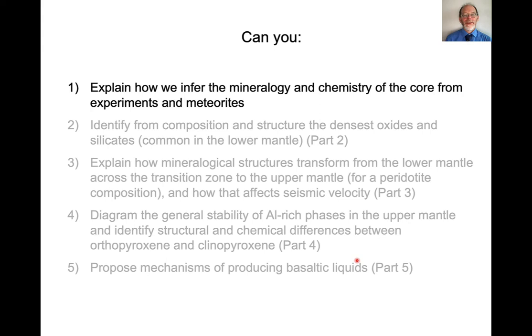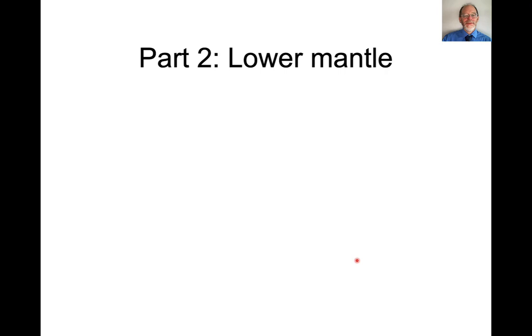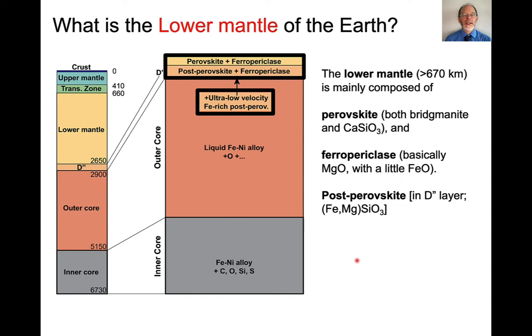So at this point, I hope you have a better understanding of how the mineralogy and chemistry of the core is determined from experiments trying to match up that density versus pressure curve, and from meteorites, just seeing that there are iron nickel alloys present in meteorites.